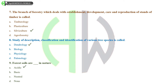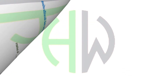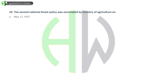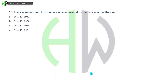The second national forest policy was enunciated by the Ministry of Agriculture on: 12th May 1952, 12th May 1950, 12th May 1954, or 12th May 1955? And the correct answer is 12th May 1952.